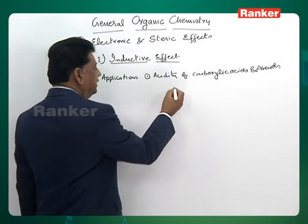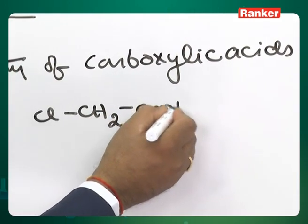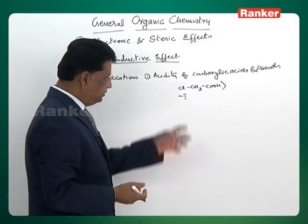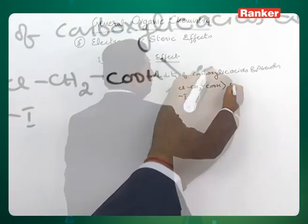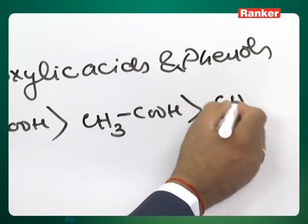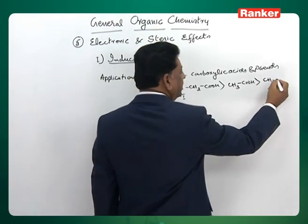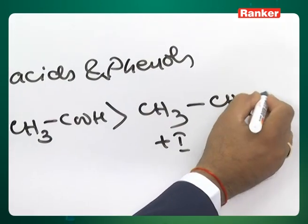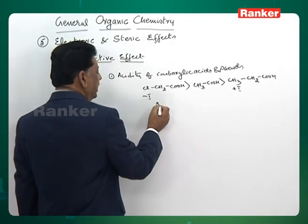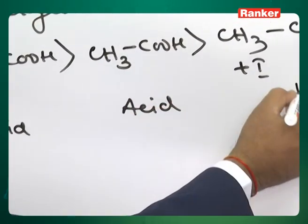We studied that if there is an electron-withdrawing group in a given acid like acetic acid, it is said to have a stronger minus-I influence, which increases the acidity compared with a normal acid. When there is a plus-I group, such as in propanoic acid, it becomes the weaker acid.